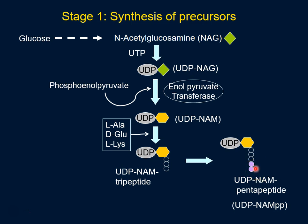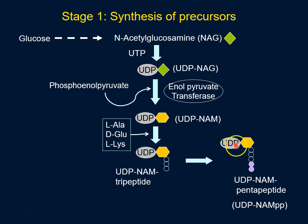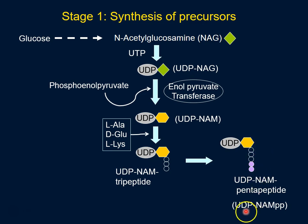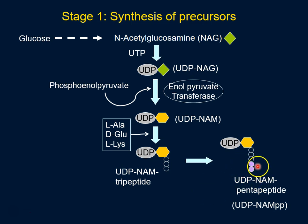These are D-alanine D-alanine — two amino acids that are attached at the final stage. As you know, most of the amino acids available in the environment are in the L form. So let's look at how bacteria obtains D-alanine.